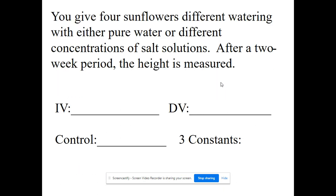Another example: four sunflowers are watered with either pure water or different concentrations of saltwater solution, and after two weeks we measure their height. The independent variable — the cause of change — is the concentration of saltwater. The dependent variable — the effect — is the height of the plant.